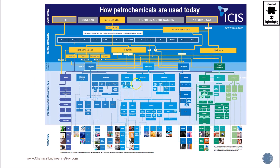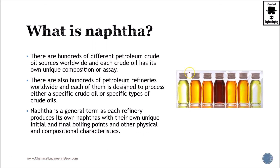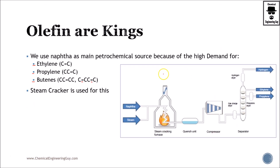Why are they so important? From naphtha we obtain ethylene, propylene, and C4, which is essentially butadiene and butanes. Check out all the materials that we can produce — from only these feedstocks we can obtain all these downstream materials.